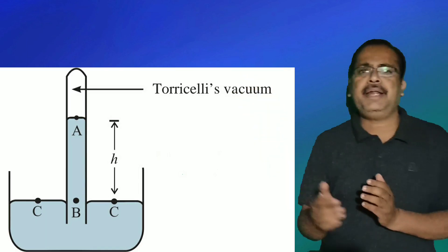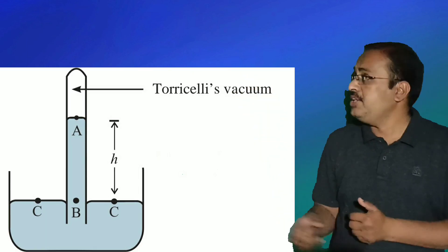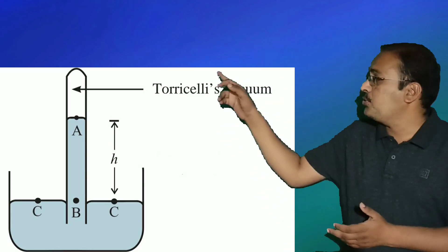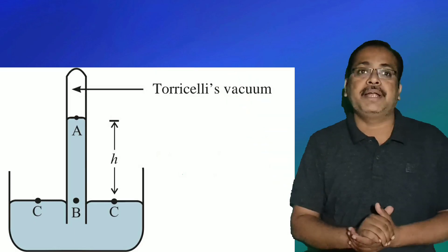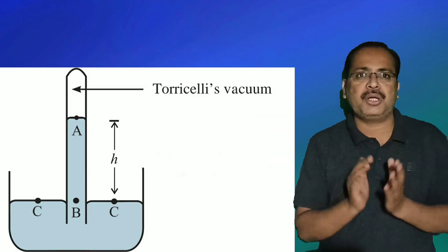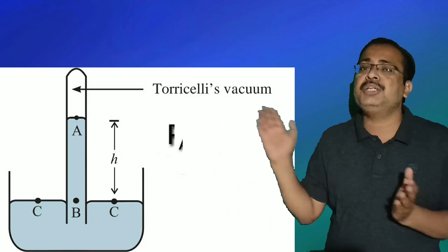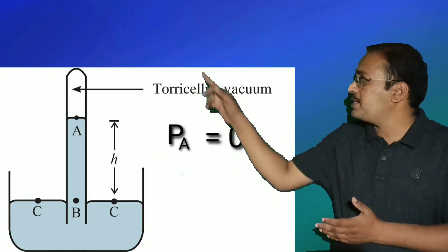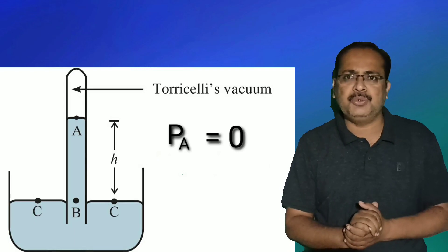The pressure at the upper end of the mercury column inside the tube is zero. From the diagram, this point is called A, therefore the pressure at point A is zero: PA = 0. This is equation number 1.